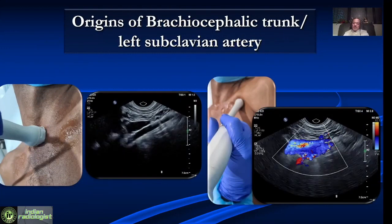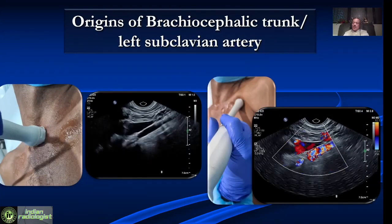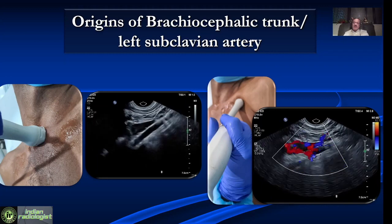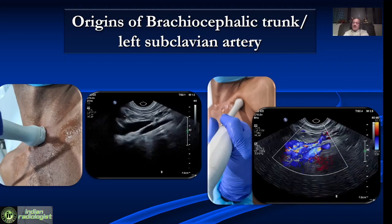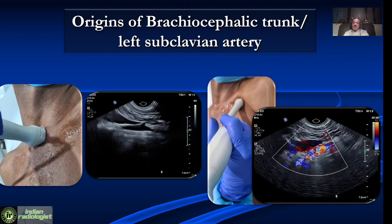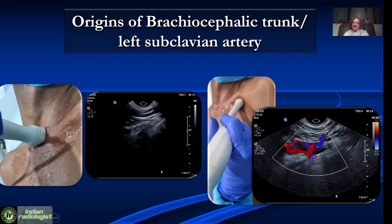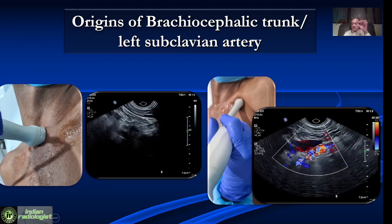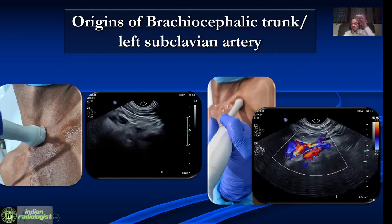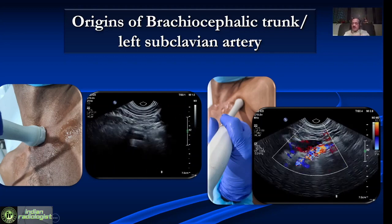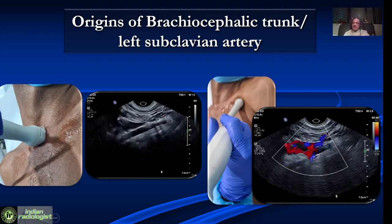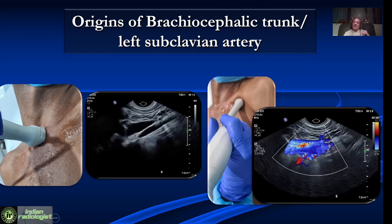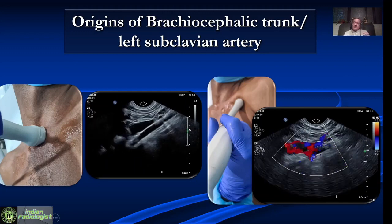One of the most important problems in subclavian artery evaluation is looking at the origins — the origin of the left subclavian artery and the origin of the brachiocephalic trunk — because they are hidden by bones. Typically we either use a cardiac probe, which has a very small footprint, or a transvaginal probe to look at origins. This is important because stenosis is very often at the origin.